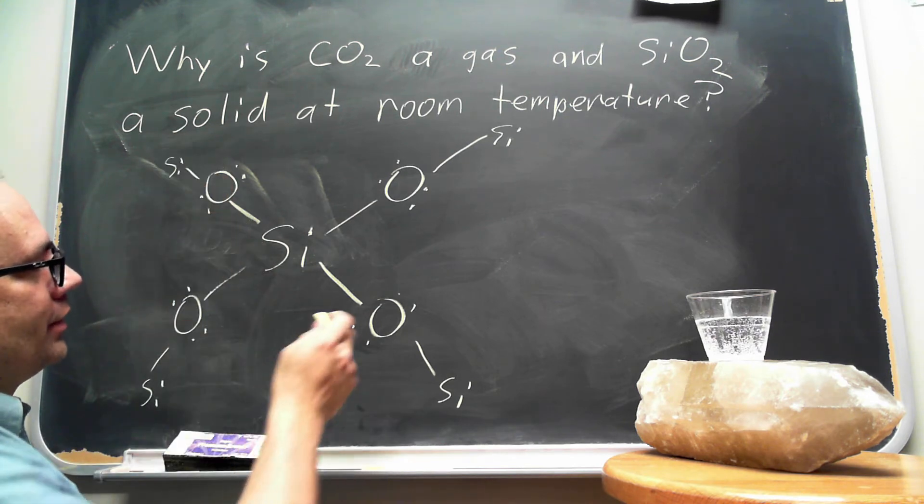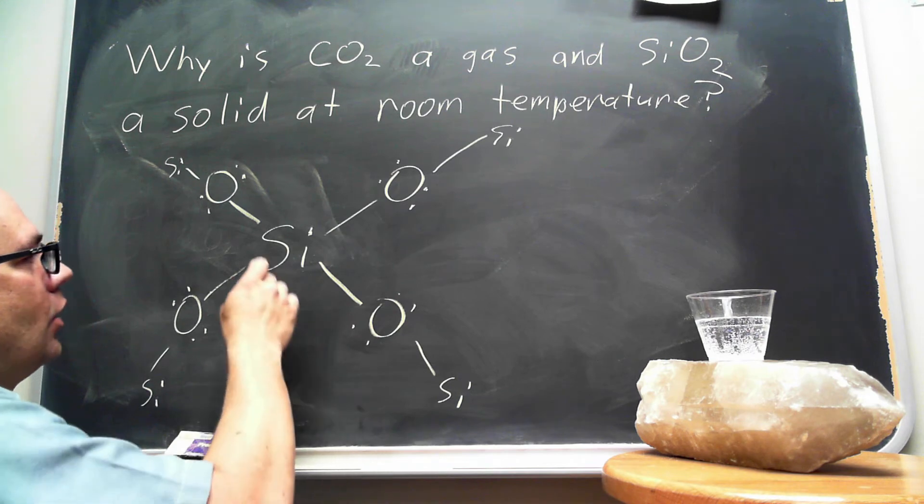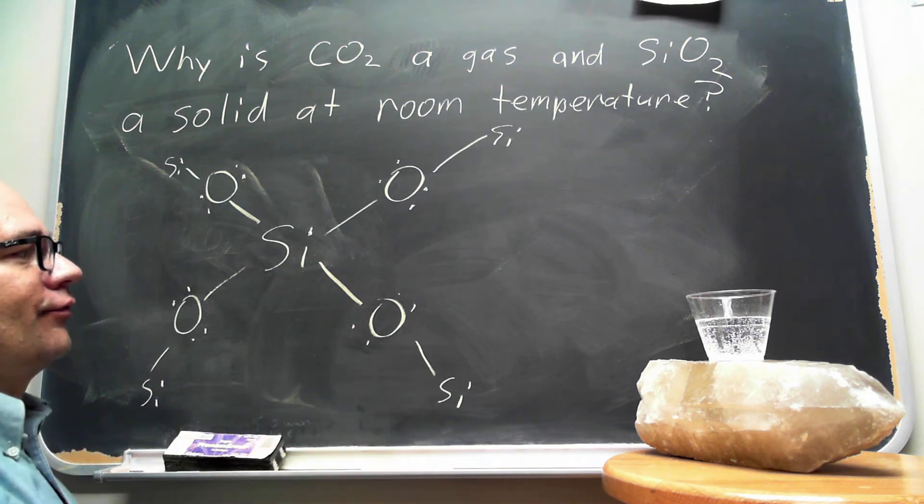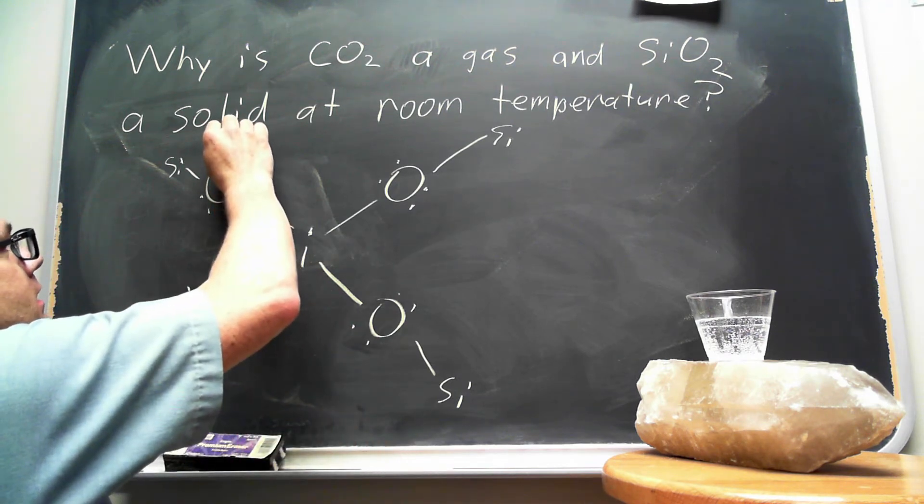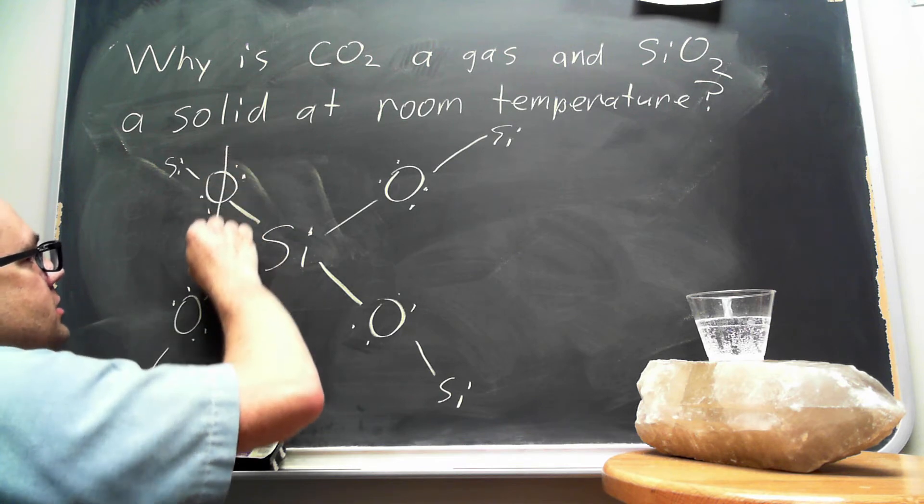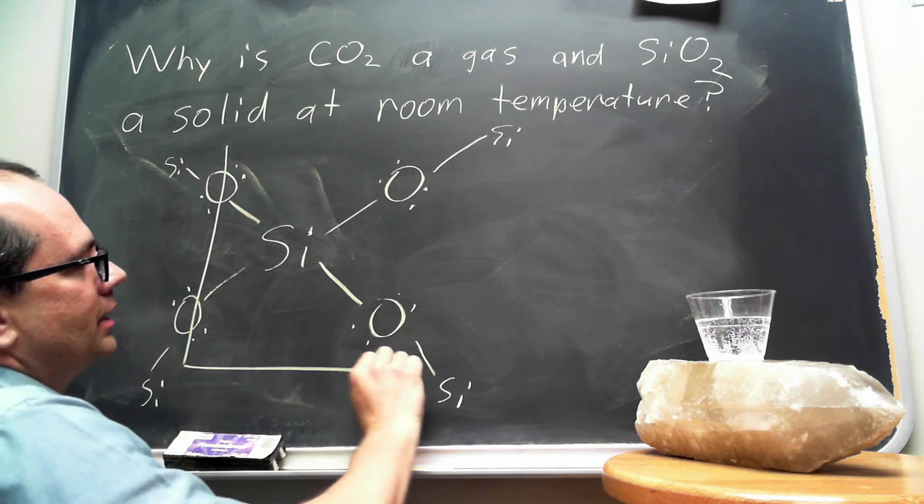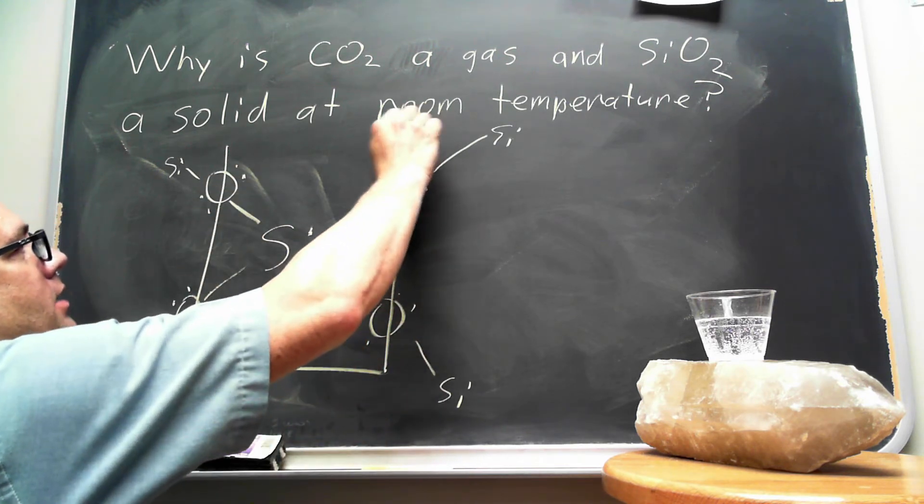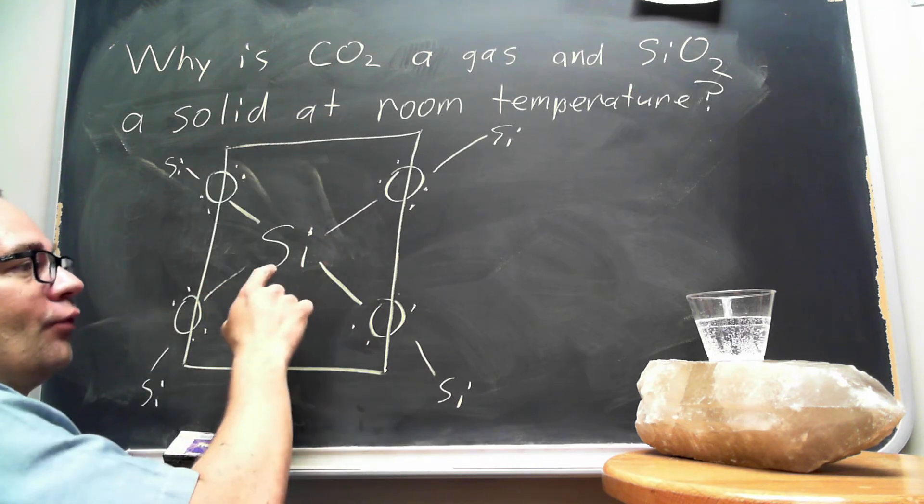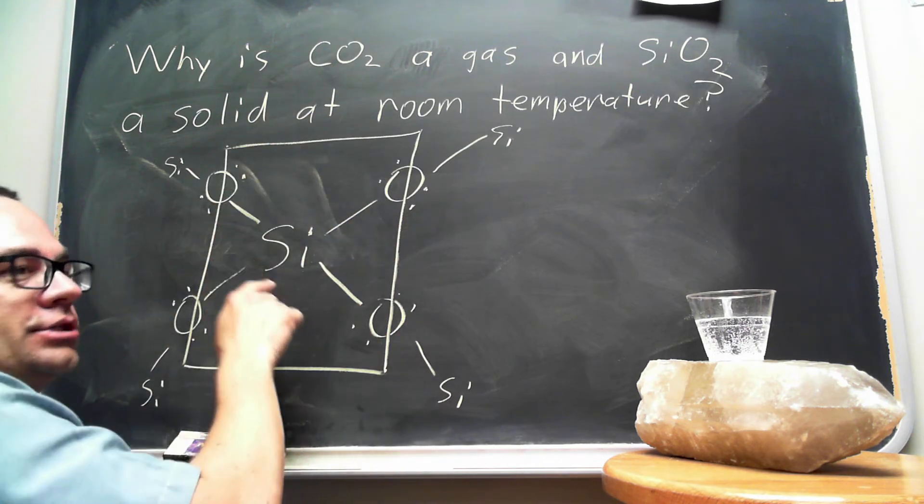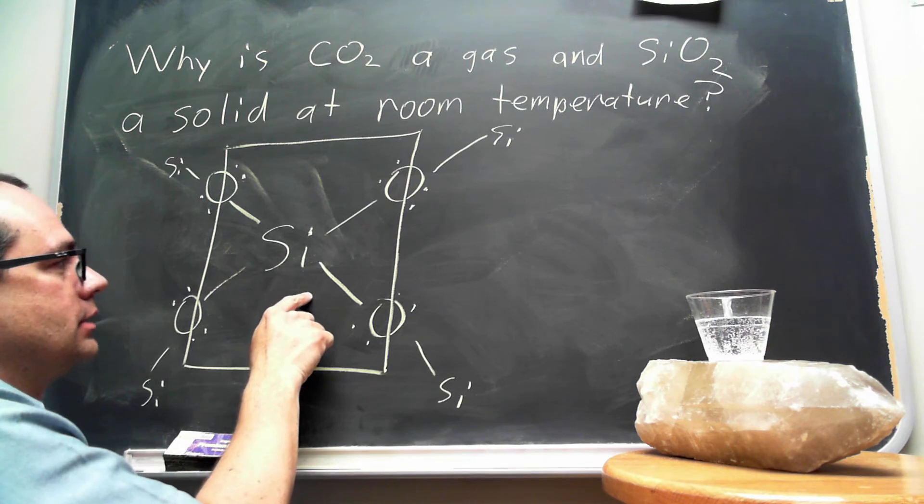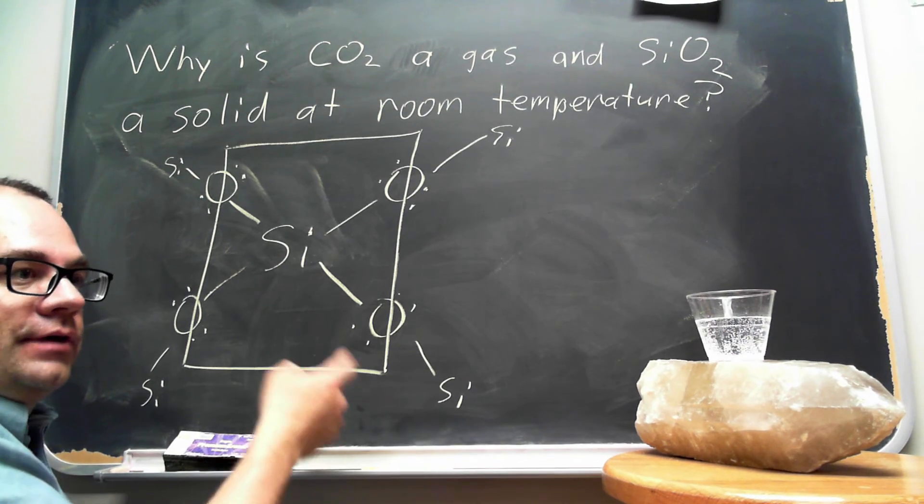Now you might say okay well there's four oxygens on the silicon, why is it not SiO4? What you need to realize is that these oxygens are shared between the silicon atoms and so there are four half oxygens per silicon atom. So this gives a net formula of SiO2.